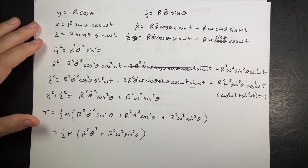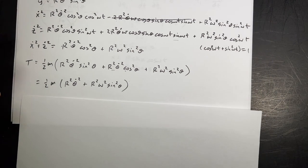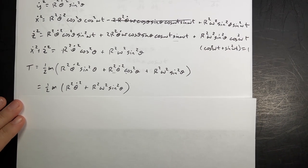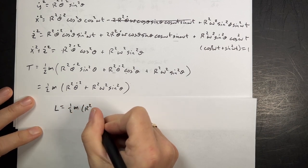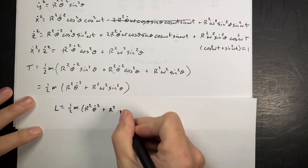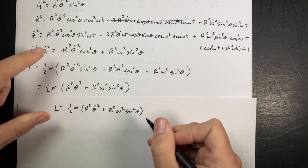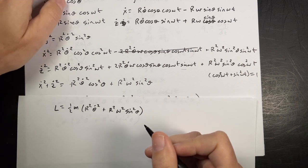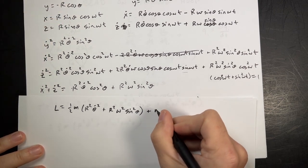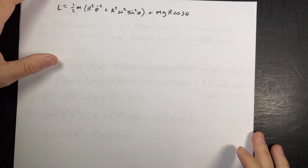Now I have the kinetic energy. The potential energy is just mgy and I have y equals negative r cosine theta. So I can write the total Lagrangian: L equals one-half m times (r squared theta_dot squared plus r squared omega squared sine squared theta) minus mgy. But y is negative r cosine theta, so I get plus mgr cosine theta. That's my Lagrangian.